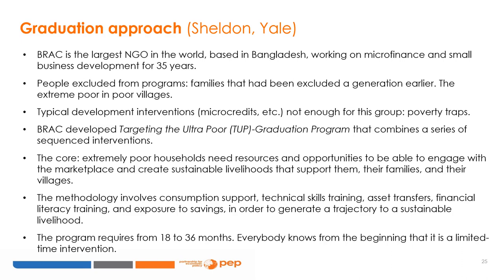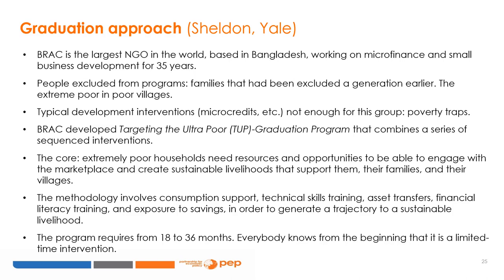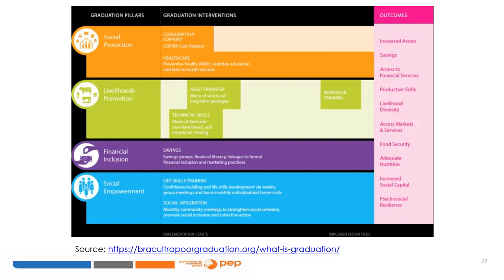The program runs from 18 to 36 months, and everyone knows from the beginning that this is a limited-time intervention. The six elements of the Targeting the Ultra Poor program are: coordinated production asset transfers, savings, health interventions, home visits, consumption support, and technical skills training.